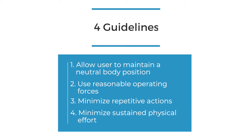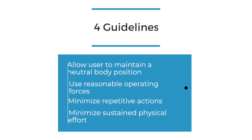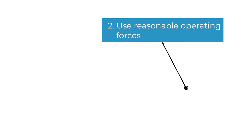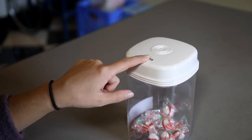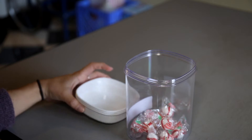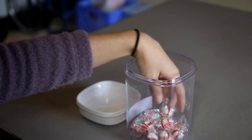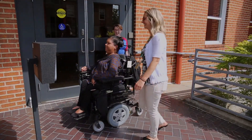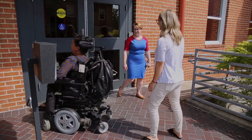The next guideline for low physical effort is use reasonable operating forces. This includes designs that require minimal movements to use the product. Examples can include a storage container that can be easily opened with little force, or a building entrance that doesn't require the use of a hand.